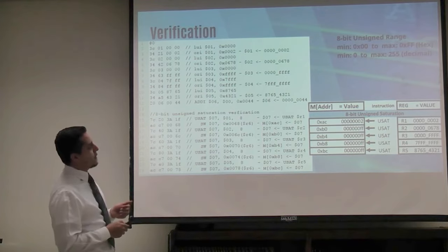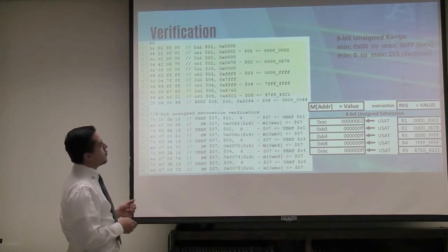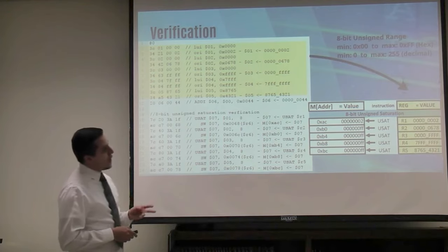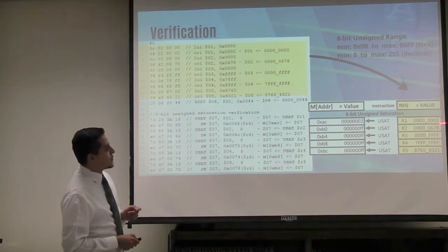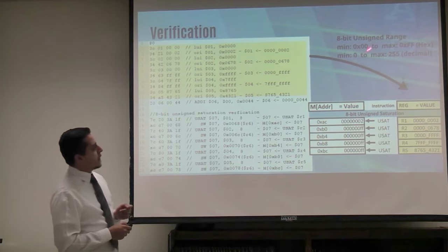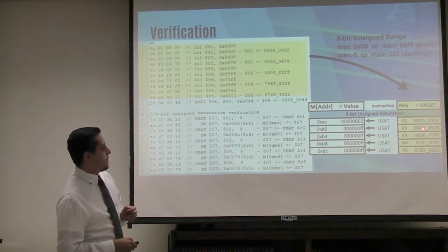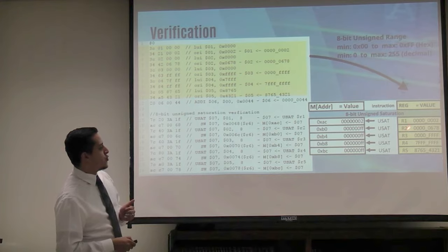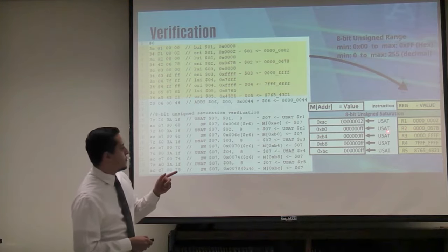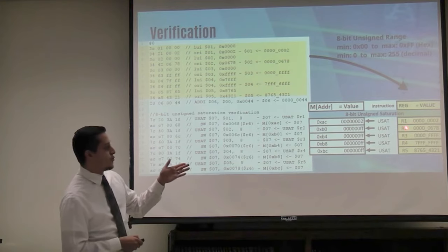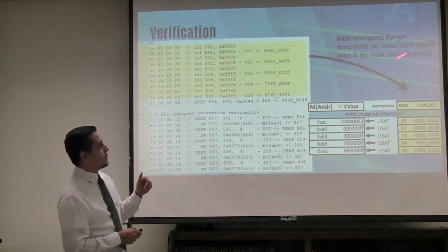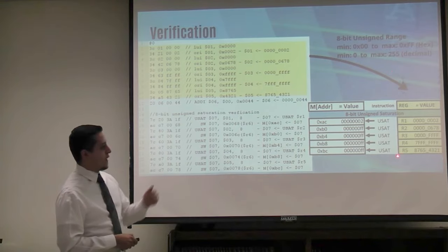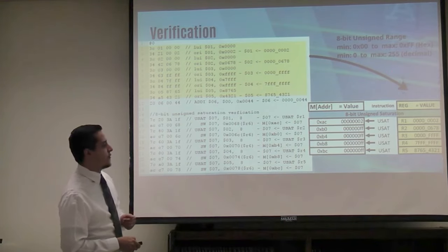For 8-bit unsigned saturation, bigger range, we load registers 1 through 5. Register 1 holds 0 and gets passed because it's within our range. R2, R3, and R4 get saturated to the maximum value, which is FF. And R5 also gets saturated as it's a bigger value. We save to our memory locations.